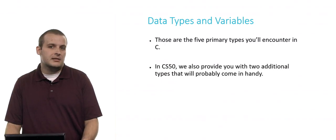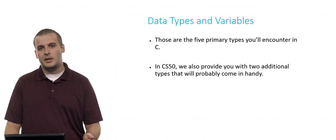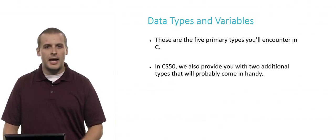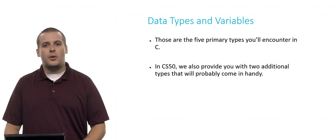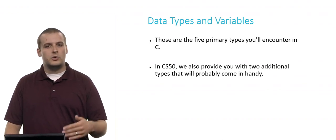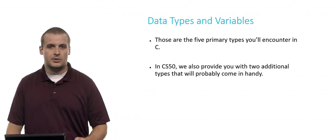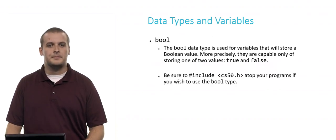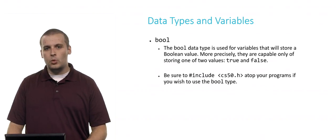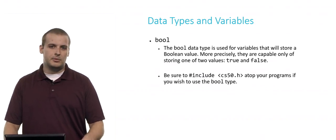All right. So those are the five types that you'll encounter that are built into C. But in CS50, we also have a library, CS50.h, which you can include and which will provide you with two additional types that you'll probably be able to use on your assignments or just working generally programming. The first of these is bool. So the Boolean data type, bool, is used for variables that will store a Boolean value. If you've ever heard this term before, you might know that a Boolean value is capable of only holding two distinct values, true and false.